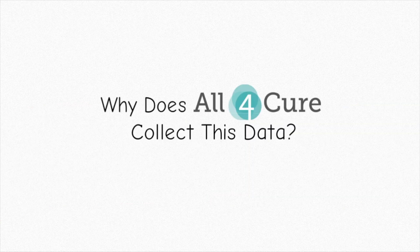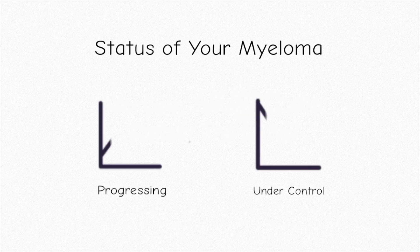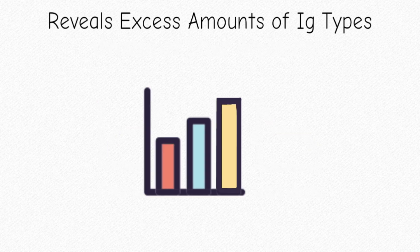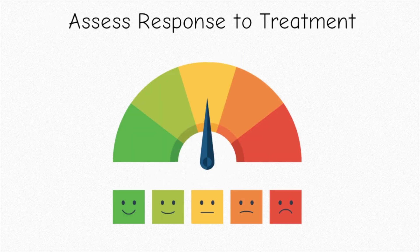So why does All4Cure collect all of our data? Well, it's because our levels can help monitor the course of someone's disease. We reveal if there are any excess amounts of immunoglobulin types, and we can help assess the response to a certain treatment.